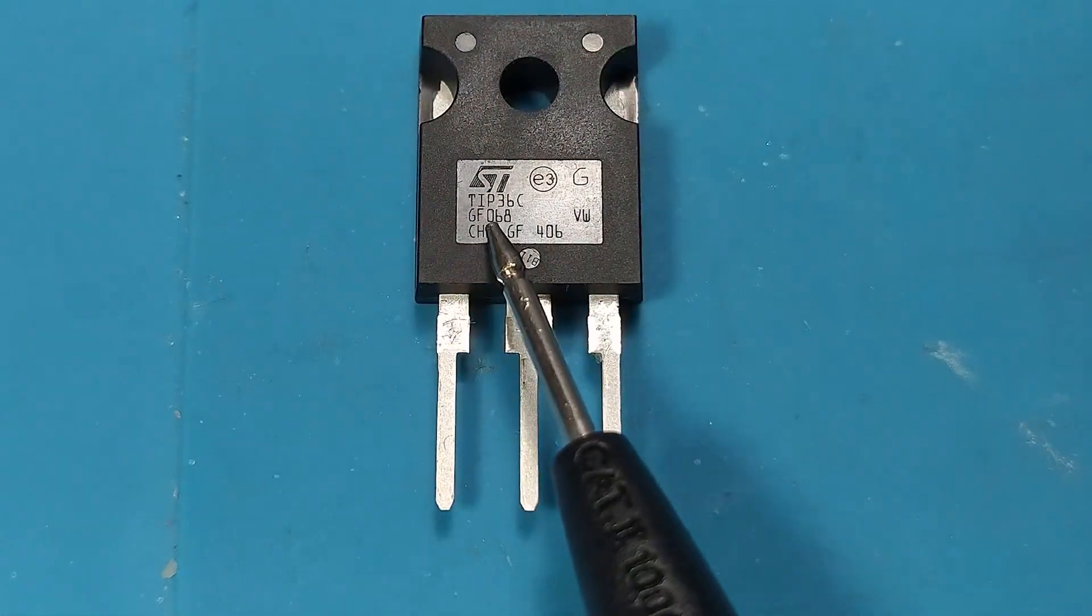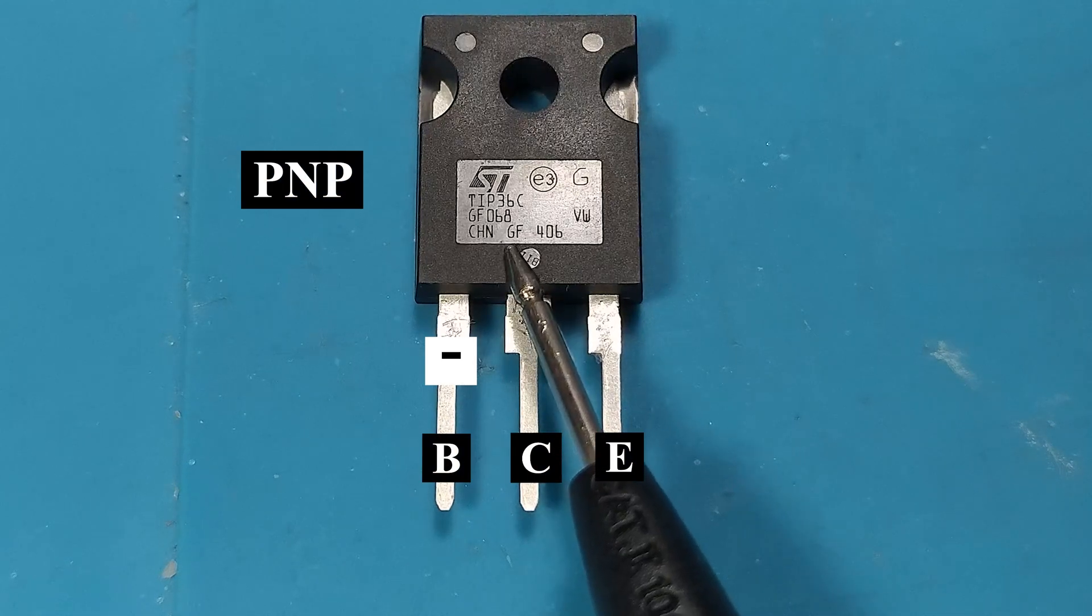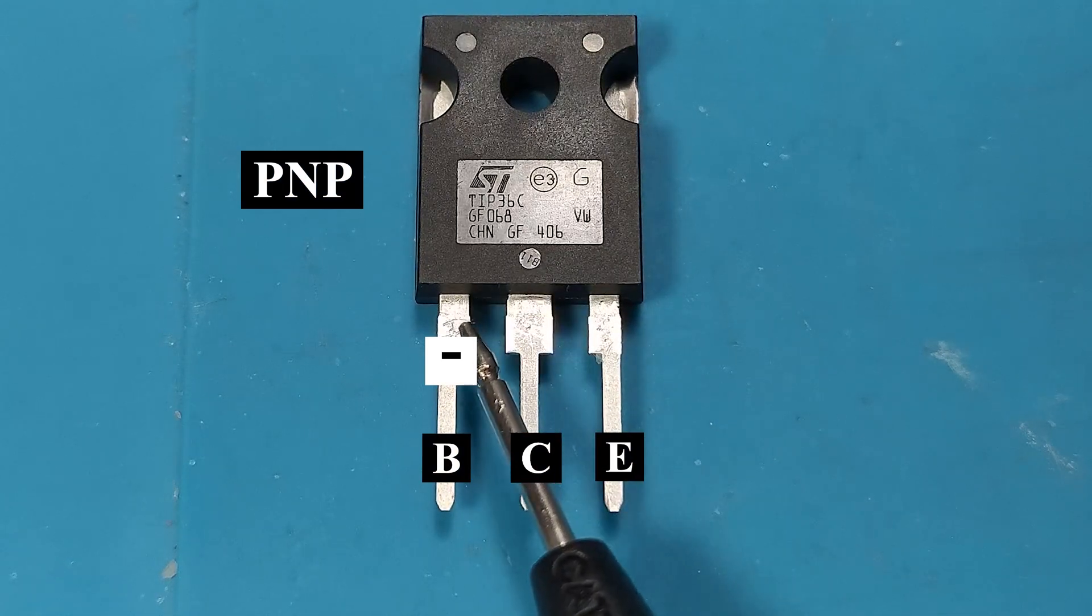From these measurements we deduce that the TIP36 transistor is a PNP type with minus on the base.